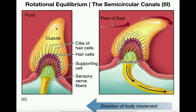If we were at rotational equilibrium — not rotating at all, basically standing still with no rotation — then this is what your cupula basically looks like. It sits right in the ampulla of that semicircular canal, surrounded by fluid.